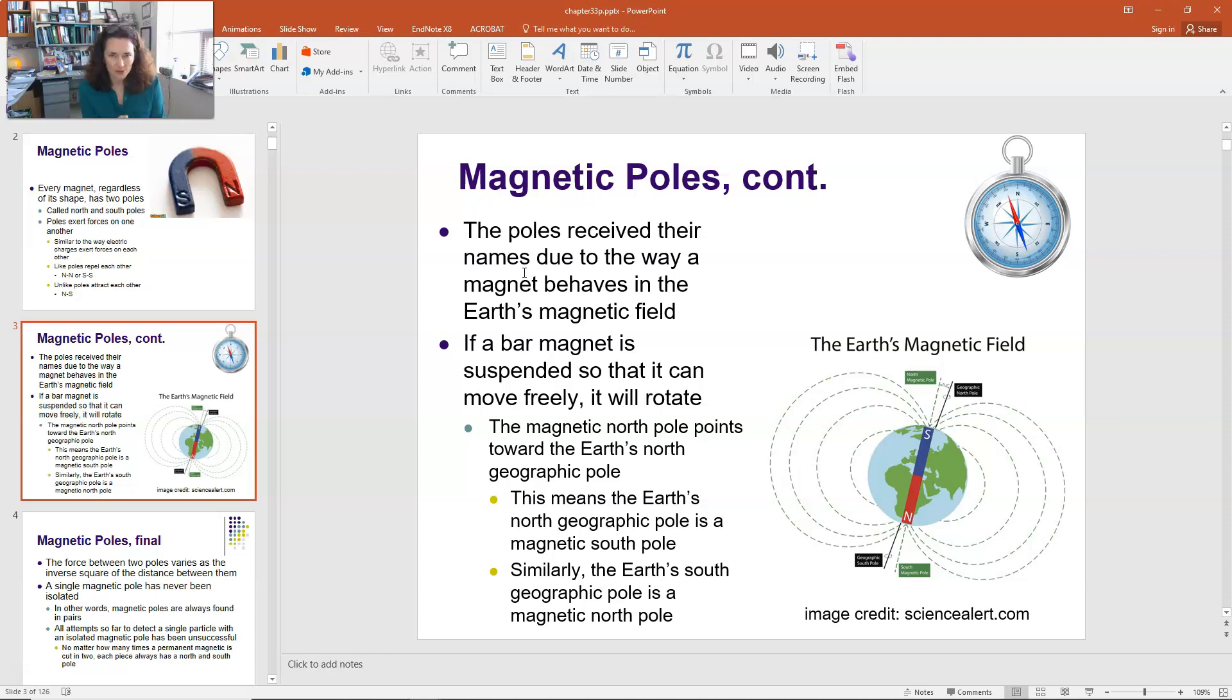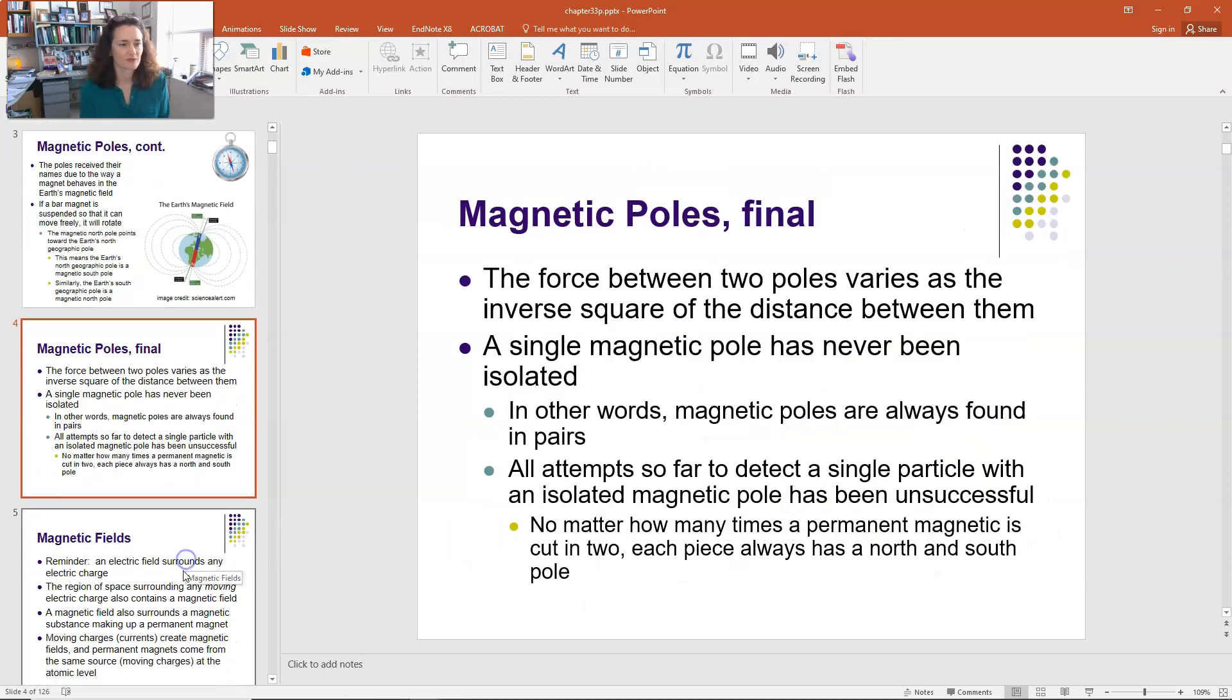But since we know that dissimilar poles attract one another, what this actually means is that the north pole of the magnet points towards the geographic north pole of the Earth, which means that the geographic north pole of the Earth is a magnetic south pole. And that's shown in this little cartoon over here. So the Earth's magnetic field is generated as shown. Of course, we do have that bar magnet right in the center of the Earth. No, I'm just kidding. But the geographic north pole is the magnetic south pole of the Earth. And so when your compass needle is placed in the magnetic field, it will rotate to align as such.